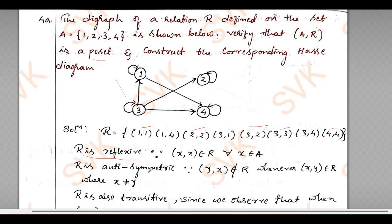Similarly, R is antisymmetric. Since if you consider (x,y) belongs to R, there is no term relation called (y,x) belongs to R. When I consider (3,2), there is no relation called (2,3). That is why I can say that it is antisymmetric.